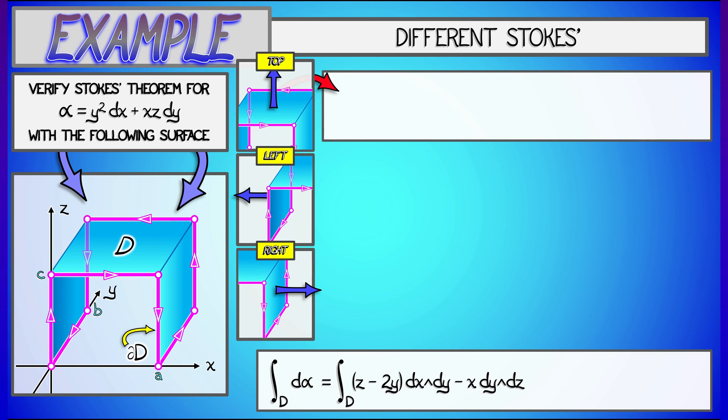So now, we have to integrate d alpha over these three pieces. Let's start with the top. That term is seen by the dx wedge dy component. So I need to integrate z minus 2y dx wedge dy. Since z is a constant of c, I'm integrating c minus 2y, and then doing the integral as x goes from 0 to a, y goes from 0 to b.